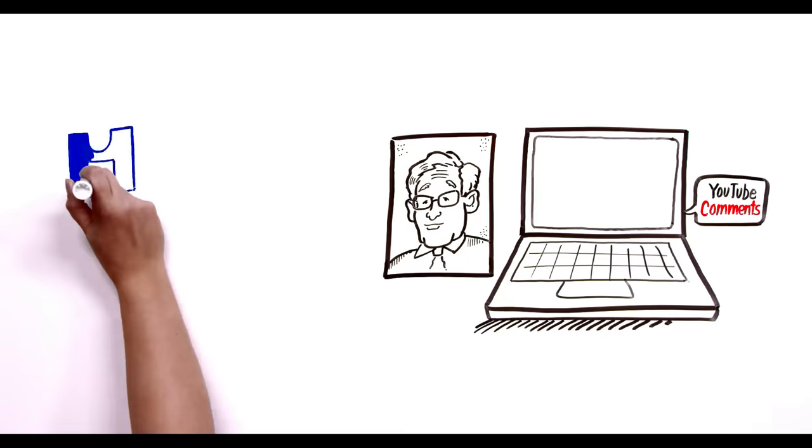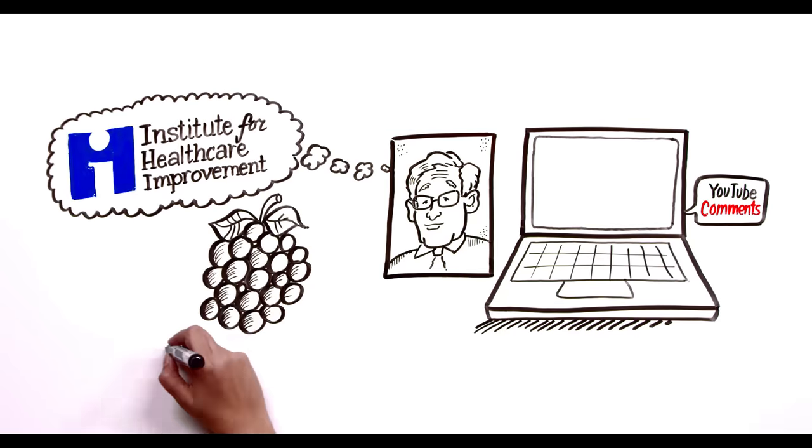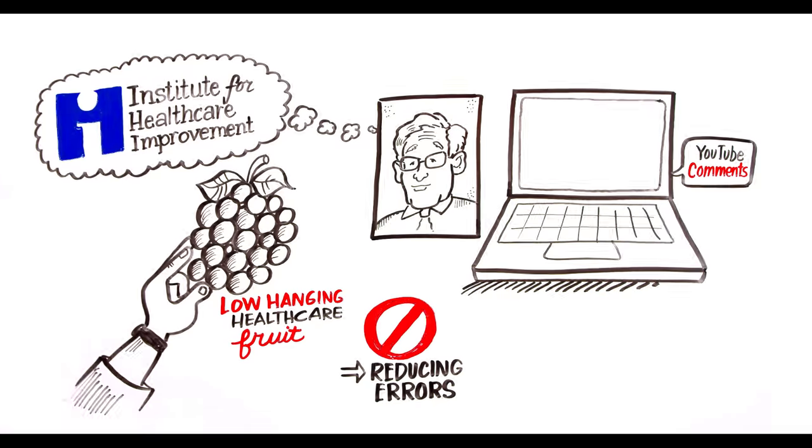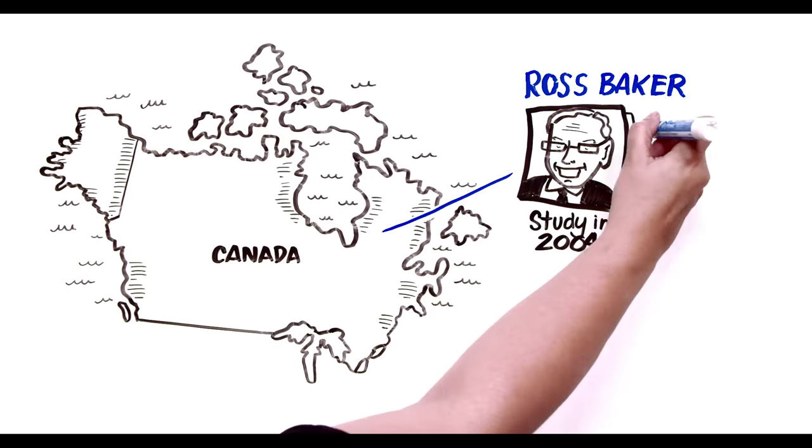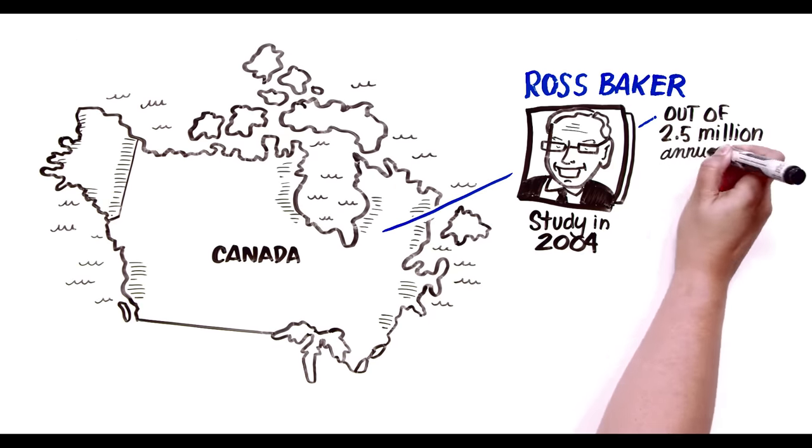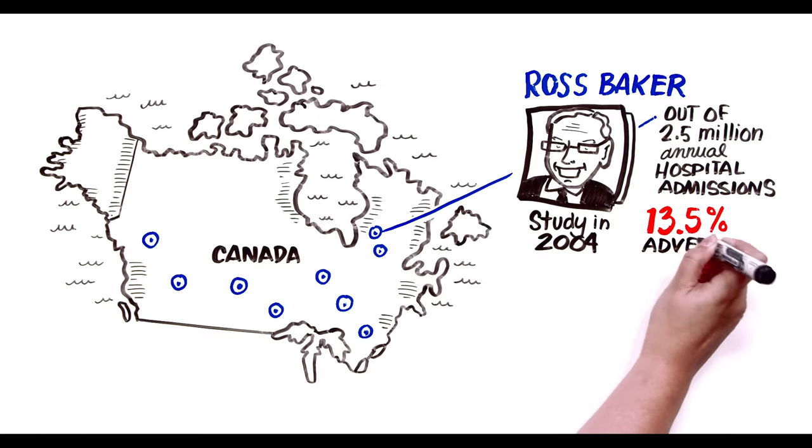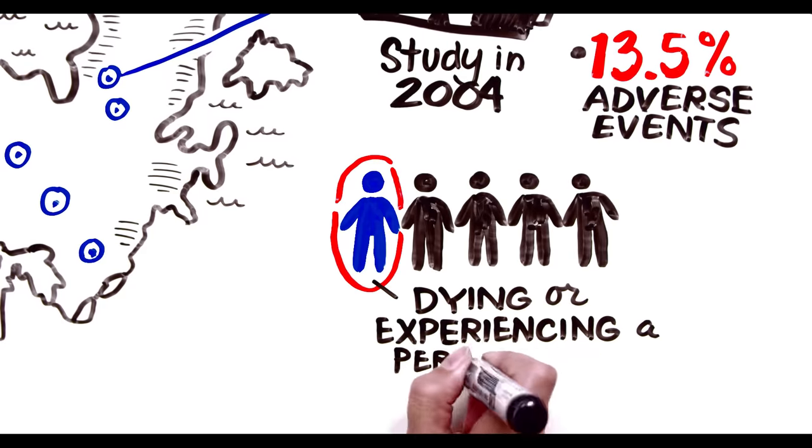Now, Dr. Berwick went on to co-found the Institute for Healthcare Improvement, or the IHI, and started focusing on the low-hanging healthcare improvement fruit, which is mostly reducing errors. For example, in Canada, a researcher named Ross Baker led a study in 2004 that showed of 2.5 million annual hospital admissions, about 13.5% were having adverse events, with one in five of those people dying or experiencing a permanent disability.